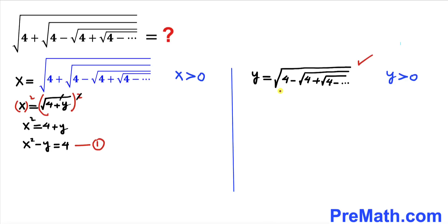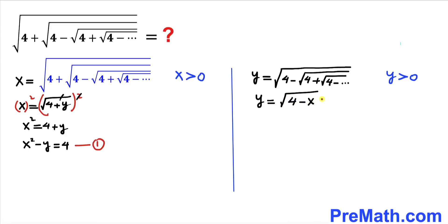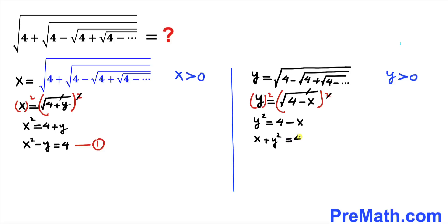Now focusing on y: y equals this expression, and we can see that the inner part is x, so the equation becomes y equals the square root of 4 minus x. Squaring both sides gives y squared equals 4 minus x, and moving x to the left-hand side gives x plus y squared equals 4. Let's call this equation number 2.